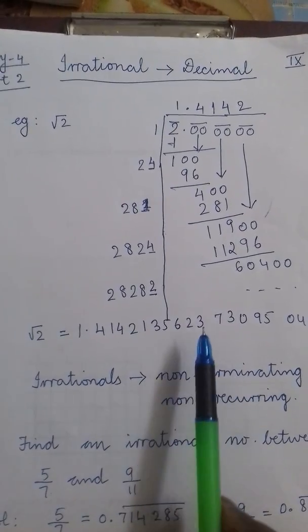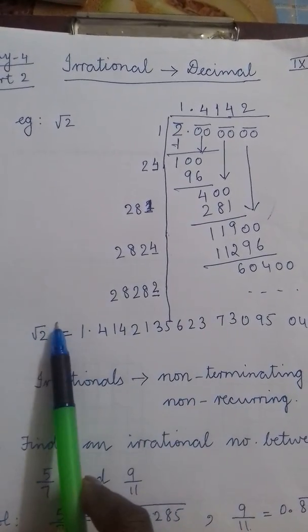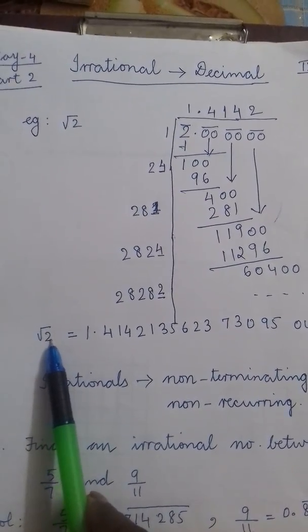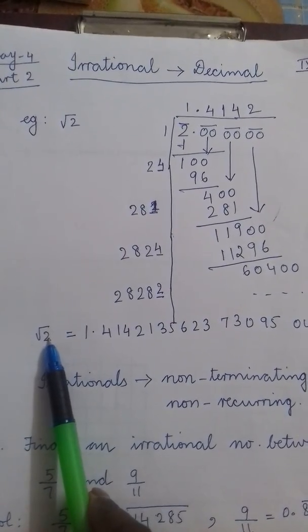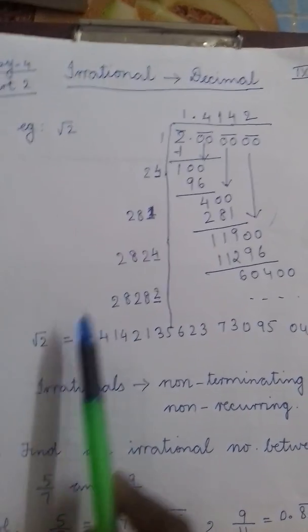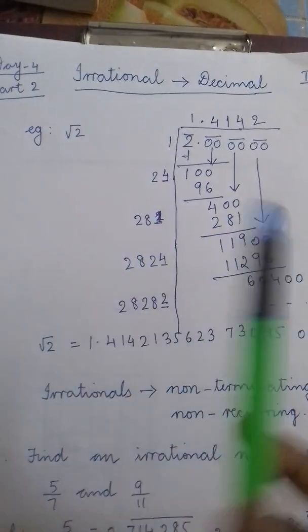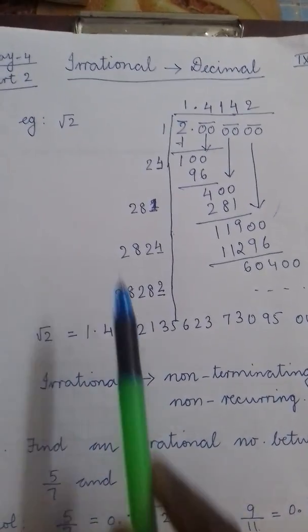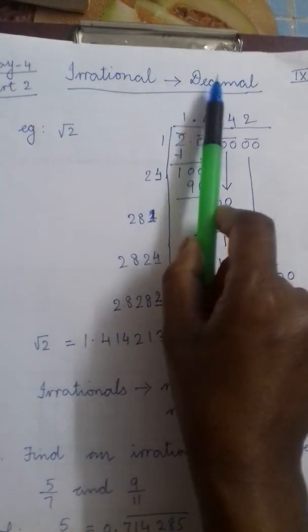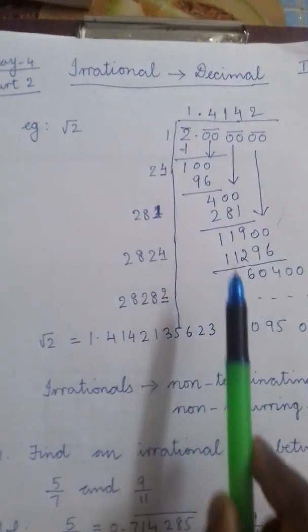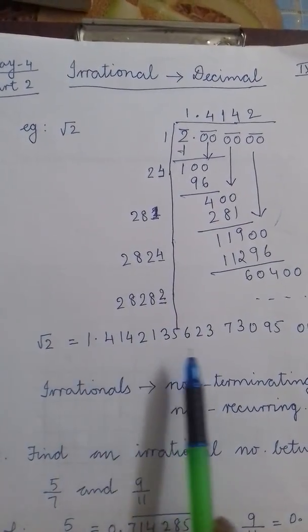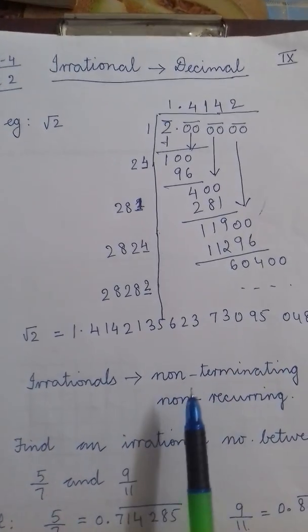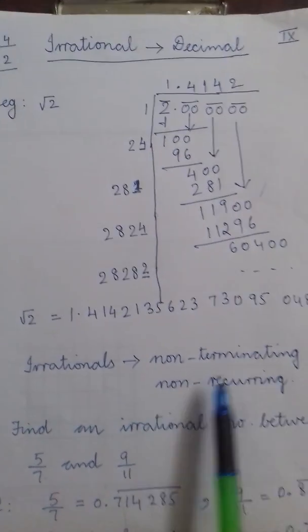Another thing, we cannot bring this back to square root 2 form by the methods which we have used to bring the decimal form of a rational number. So we can only convert irrational to decimal form and an approximate value can only be found out since it is non-terminating, non-repeating.